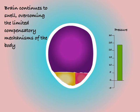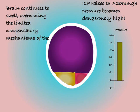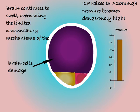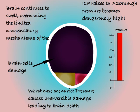If pressure rises above 20 mmHg then it begins to become dangerous. Brain cells will start to become squashed and damaged. The worst case scenario is that pressure becomes so high that the brain stem — a structure essential for such tasks as breathing and maintaining a heart rate — is crushed, resulting in irreversible brain death. Obviously, we need to intervene before this happens.